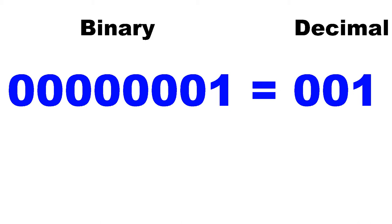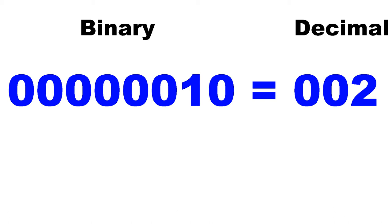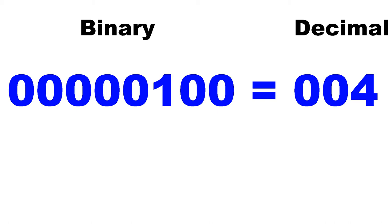Binary counting follows exactly the same rules, except that only two symbols are available. Hence, after a digit reaches 1 in binary, counting starts over at 0 while the next higher-order digit is incremented.